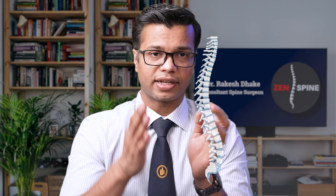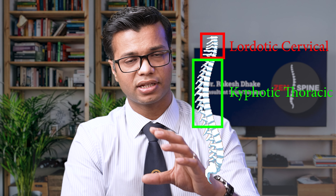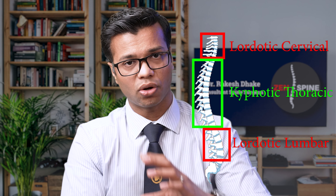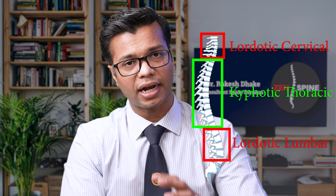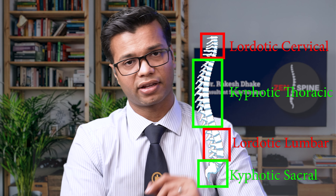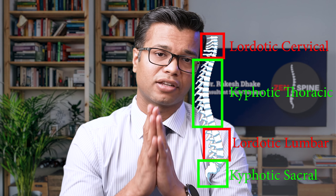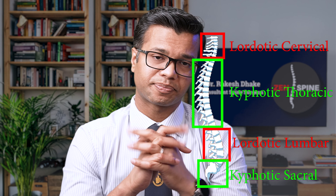Now if you look at the spine from the side, it has an S-like shape. The cervical will be lordotic, then there will be kyphotic thoracic, then there will be lordotic lumbar, and then there will be kyphotic sacral. That is how the normal spinal curvature looks like.